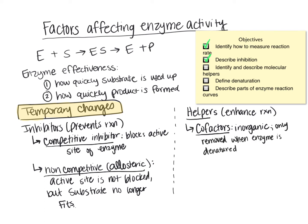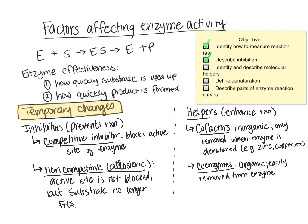Some typical examples of cofactors include many metal ions like zinc, magnesium, copper, and potassium. The other group of helpers are known as coenzymes. These are typically organic and are easily removed from the enzyme. Some examples of coenzymes are vitamins. Two coenzymes I want you to know are NAD+ and FAD2+. This brings an end to our temporary changes that affect enzyme activity — we talked about factors that prevent or reduce enzyme activity and factors that enhance or help enzyme activity.